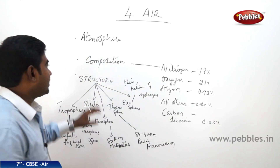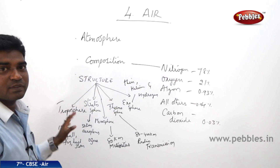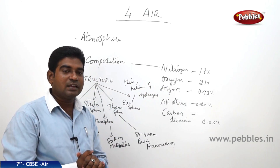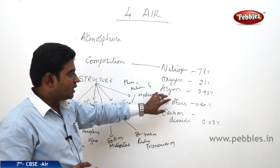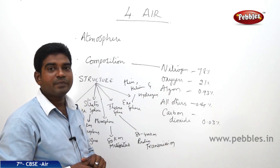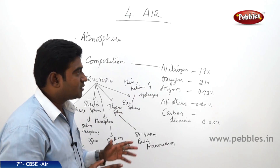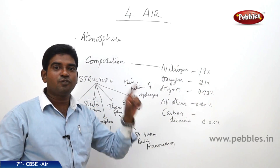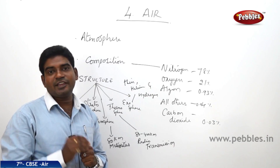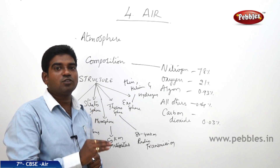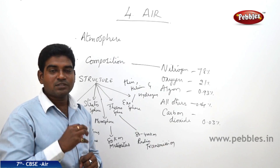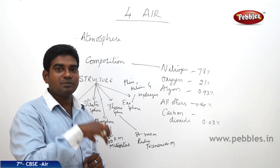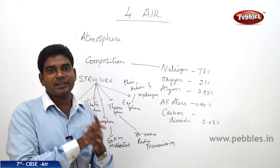What is the composition of air? The air is composed of nitrogen, oxygen, argon, carbon dioxide and other gases. The maximum chunk is held by nitrogen, which is 78%, which is very useful for plants to grow. But plants cannot take nitrogen directly. The soil absorbs the nitrogen, converts it, and from the soil the plants take it.